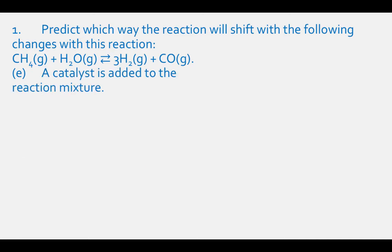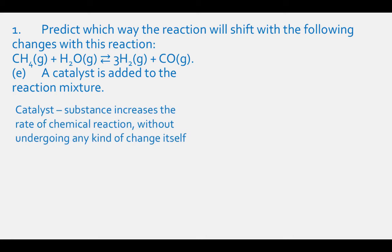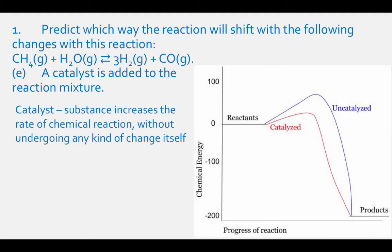In part E, a catalyst is added to the reaction mixture. The definition of a catalyst is a substance that increases the rate of a chemical reaction without undergoing any kind of change itself. This graph shows that when we add a catalyst, the rate of reaction will increase, usually by lowering the activation energy. But the catalyst has no effect on the starting and ending conditions of the reaction. Therefore, the reaction will not shift in either direction — adding the catalyst will have no effect.